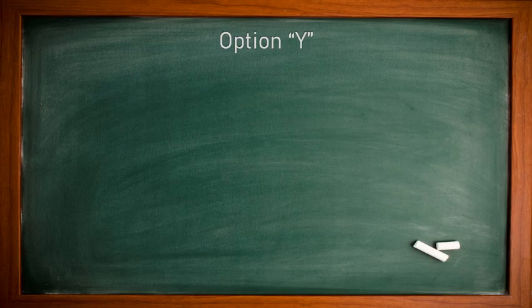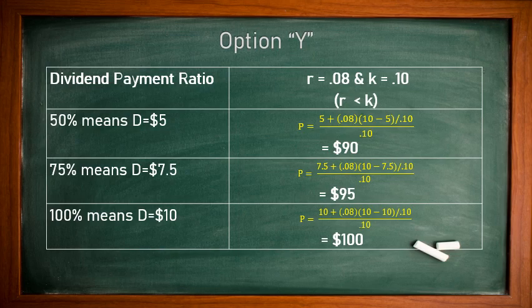Option Y: R is 8% and K is 10%, so R is less than K. At 50% dividend payment ($5), the share price is $90. At 75% ($7.50), the price is $95. At 100% ($10), the price maintains the same $100 as in option X. Comparing both options, we see that lower dividend payment decreases your value, and paying more dividend increases your value. At 100%, value is at least maintained in the market.